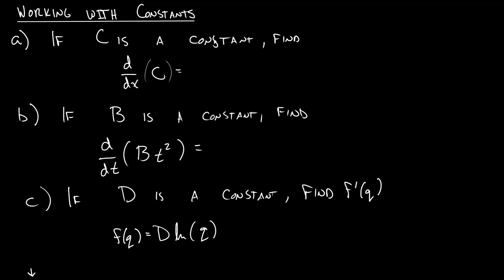In this section, we get introduced to the idea of constants. Let's start with the simplest type of problem we can. It's saying that c is a constant, and what that means is that c is some fixed number — maybe it's 2, maybe it's 5, maybe it's 30, or 1,000. We just don't know.